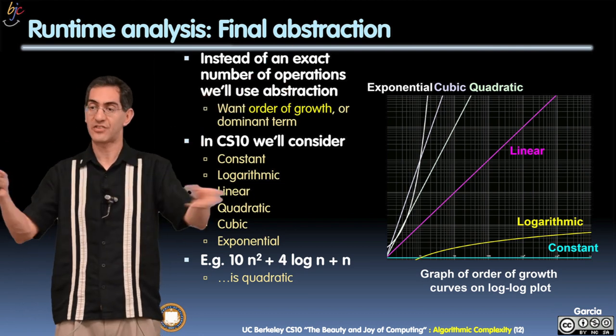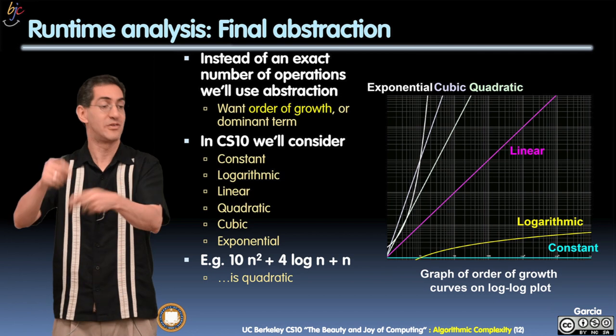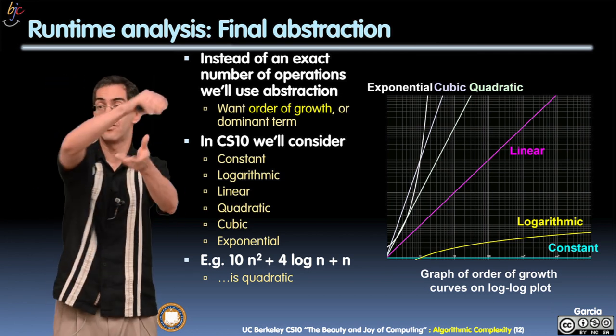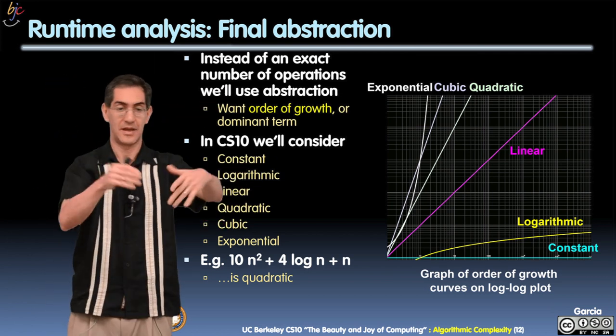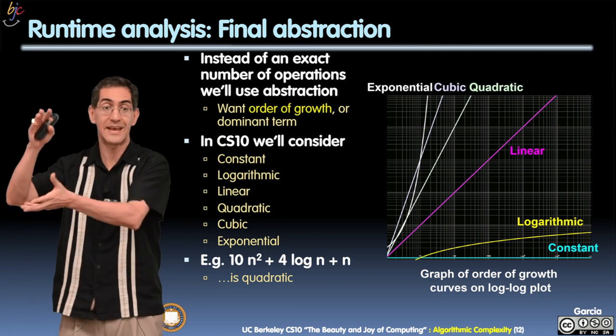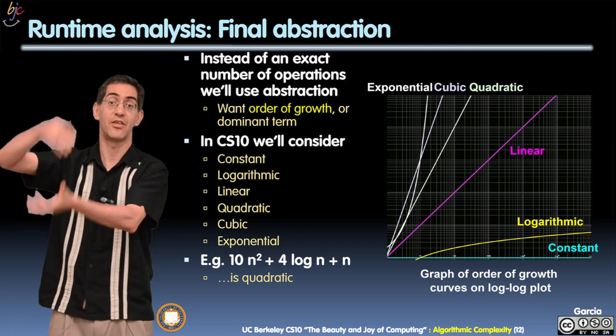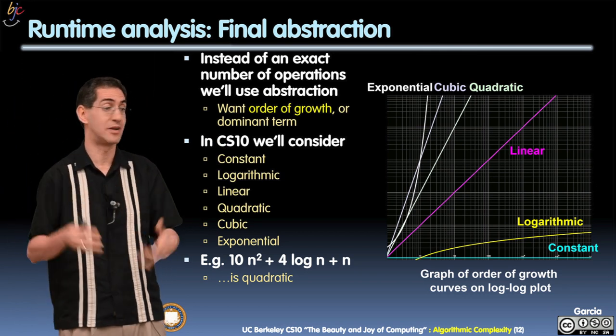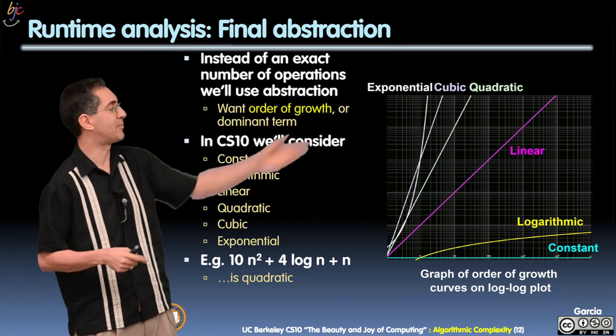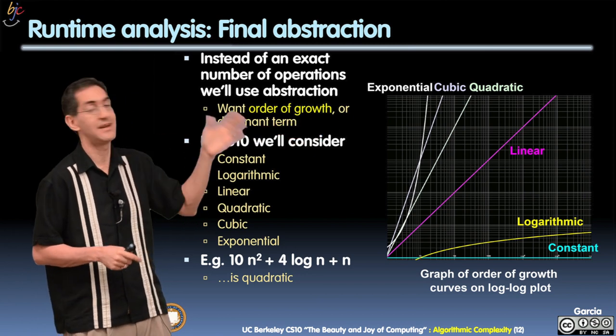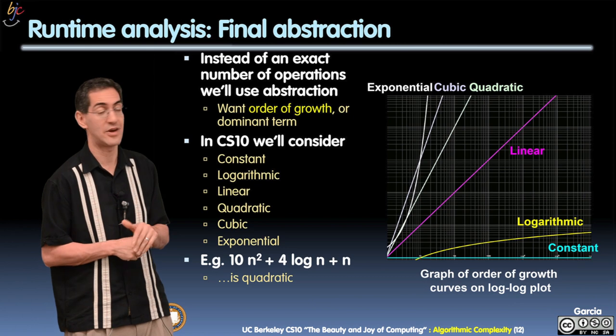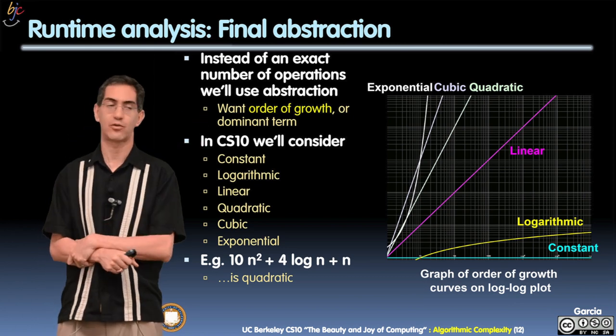So dominant terms. If I have a particular expression which has like a cubic term, which is like an n to the third, plus an n to the squared term, plus n, and maybe some constants in front of them, it's the biggest exponent that's going to win. The n to the third, the cubic term is going to be the dominant term. So for example, here's an example, 10n squared plus 4 log n plus n, the n squared term wins. And it's quadratic. So take a look at those six graphs.